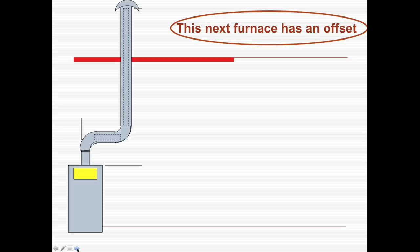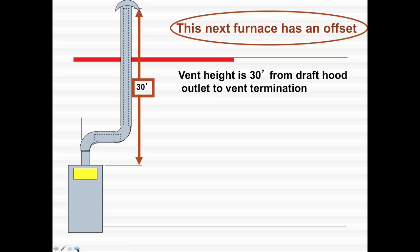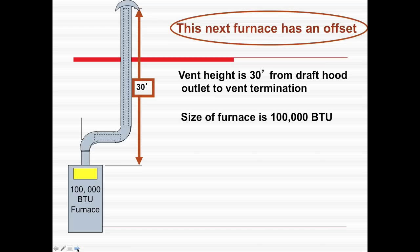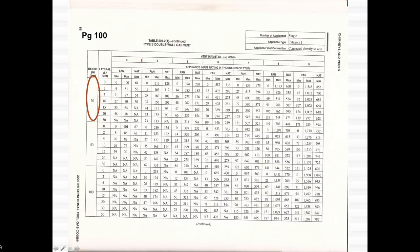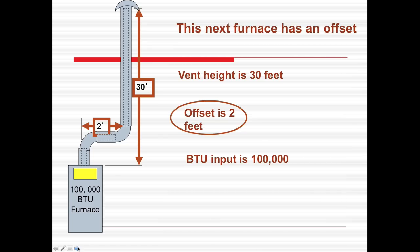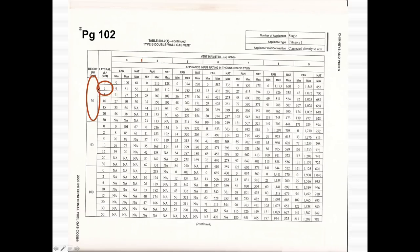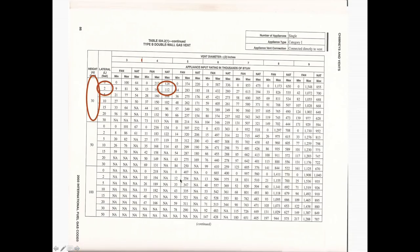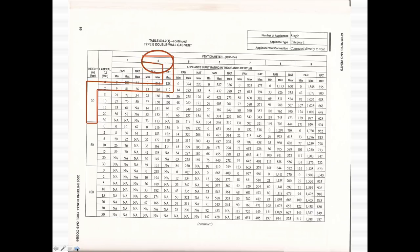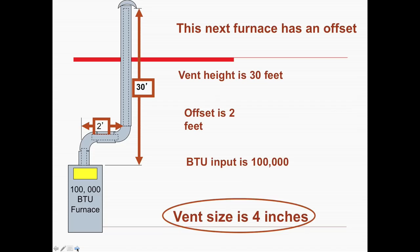This furnace has an offset. We're still using B vent. The height is 30 feet, size of the furnace 100,000 BTUs — same as the other one — with a two-foot lateral. Going to 30 feet, with the two-foot offset we use the two-foot lateral. With that two-foot lateral we can do 112,000 BTUs. So the vent size is four inches.